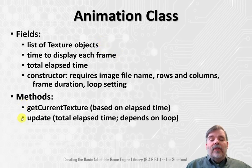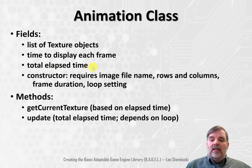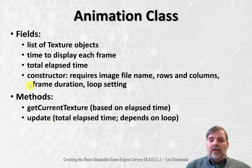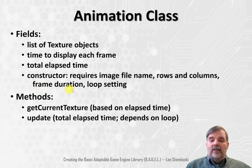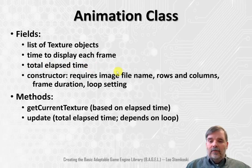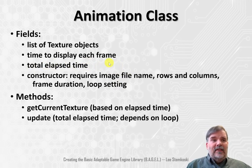Once we've written that method, the other method we'll need to write is an update method. That's basically going to increment the total elapsed time. In addition, once we get past the total time required for the animation, does the animation continue, does it restart, does it stop? So depending on the loop setting specified in the constructor, we have to do more than just add to the elapsed time — depending on how much has passed, that time might start over again.